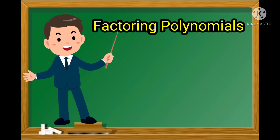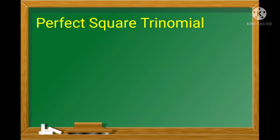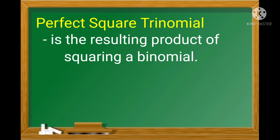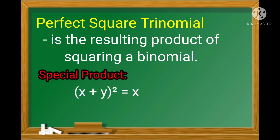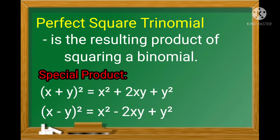To continue our topic on factoring polynomials, we will proceed to the next factoring technique, which is perfect square trinomial. A perfect square trinomial is the resulting product of squaring a binomial. Recall that in special products, when we square a binomial, each product is a perfect square trinomial — that is, (x + y)² = x² + 2xy + y², or (x − y)² = x² − 2xy + y².